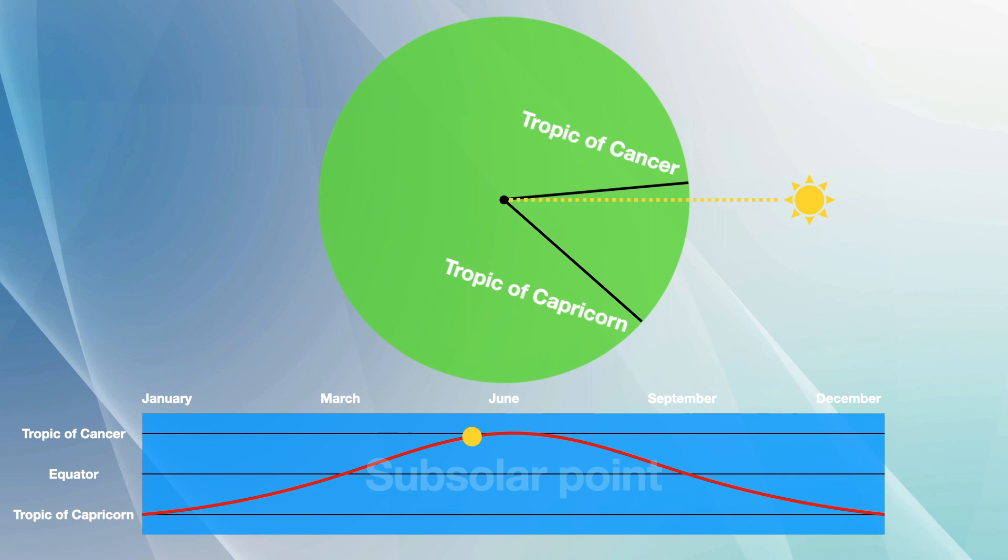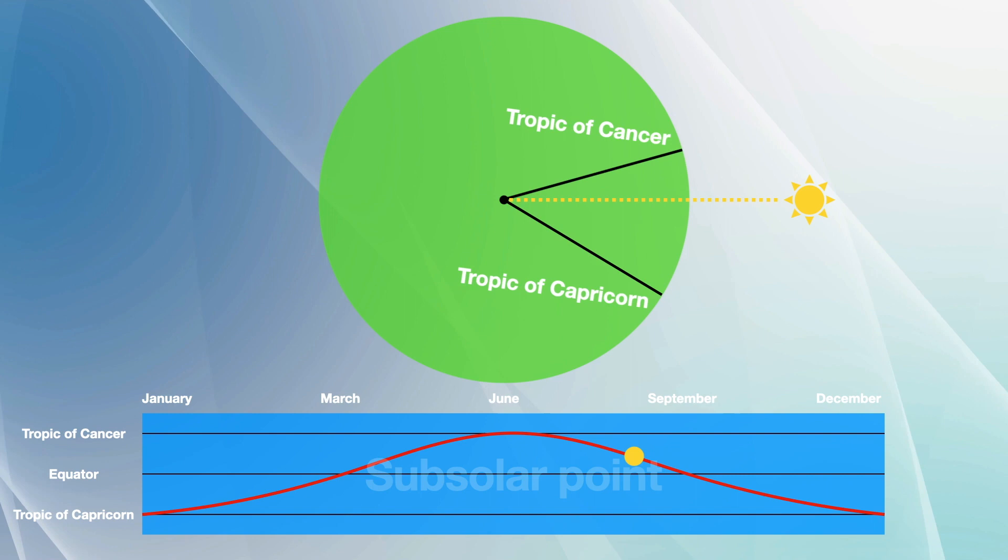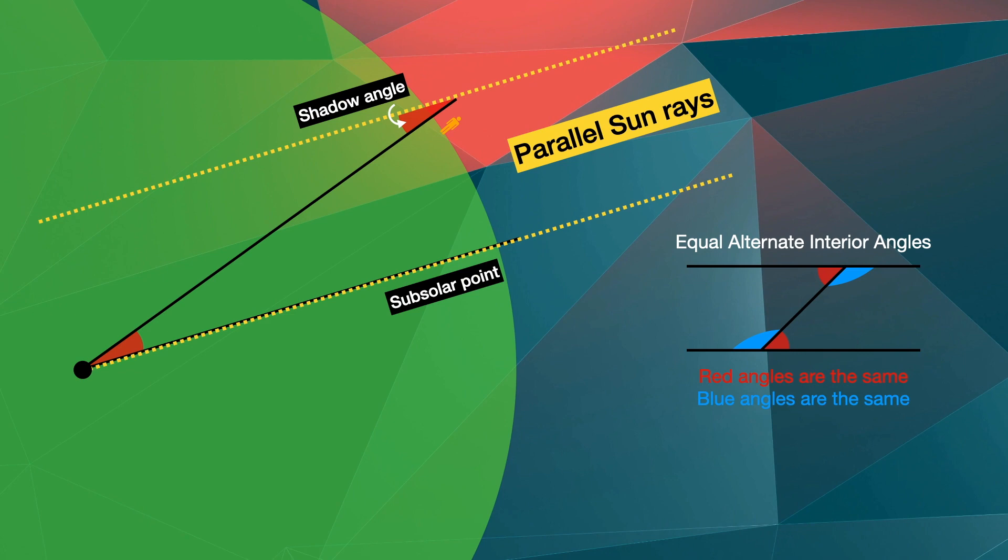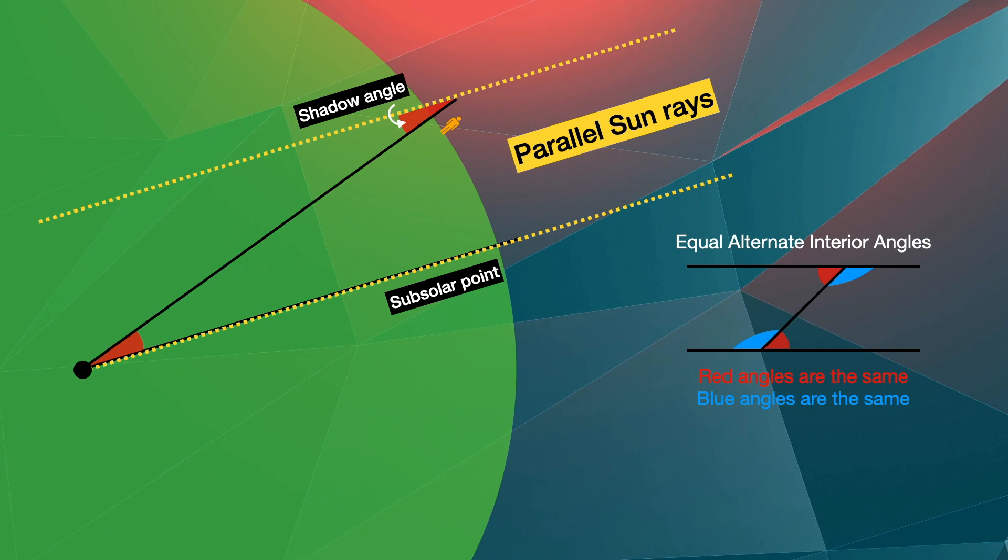On the equinoxes the subsolar point occurs at the equator. The subsolar point occurs at the tropic of Cancer on the June solstice and the tropic of Capricorn on the December solstice. Because the shadow angle and the angle between you and the subsolar point are alternate interior angles, the shadow angle at your location is equal to the angle between you and the latitude of the subsolar point that day.